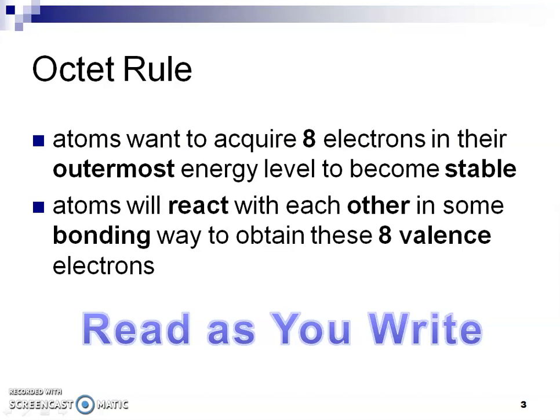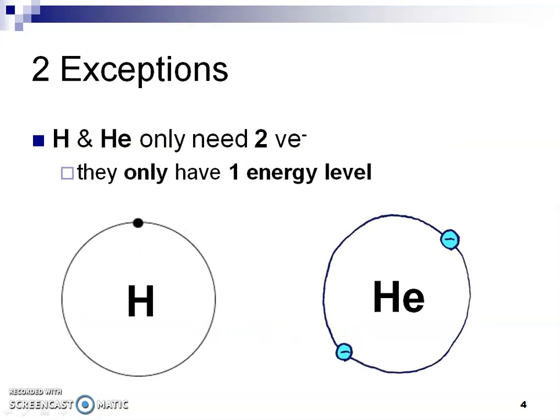There are two exceptions to the octet rule. Hydrogen and helium only have one energy level, and in that first energy level you only have a maximum of two electrons. That's why hydrogen and helium only need two valence electrons in order to be stable.